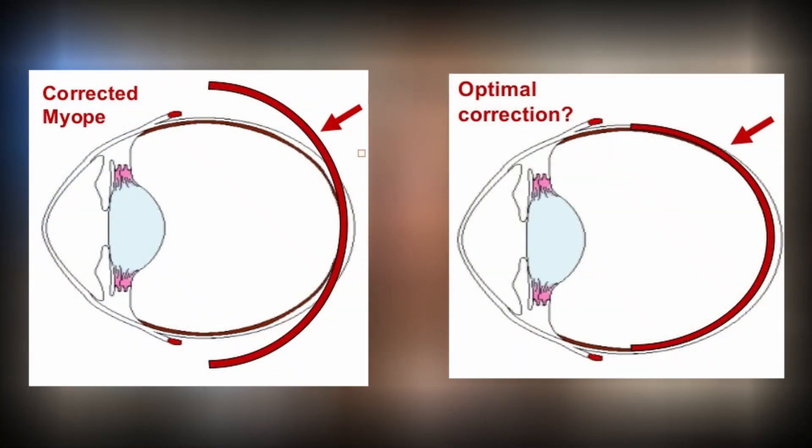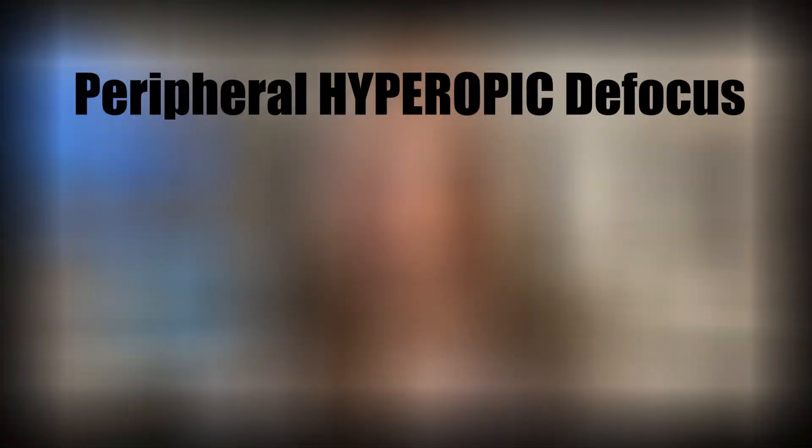The idea with myopia management is that we want to do the complete opposite — we are trying to bend and induce the image shell so that the peripheral light rays land in front of the retina peripherally, while maintaining focus centrally still. In essence, we want to move from peripheral hyperopic defocus to peripheral myopic defocus. Having the image shell in front of the retina now negates the biochemical feedback loop as a signal for the eye to grow longer. This theory has been studied extensively and is also supported by animal studies over the years.